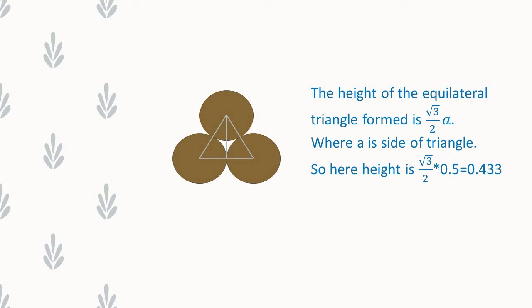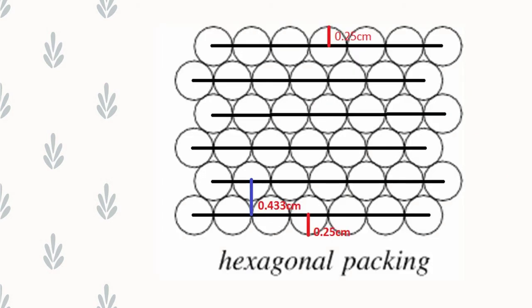Using this height, we are going to find the number of layers we can fit in the square box. See the next diagram. I joined the centers of the circles in a layer by lines. The distance between adjacent lines is 0.433 centimeters. Now I need to find how many layers of circles can be placed in the square box, whose side is 5 centimeters.